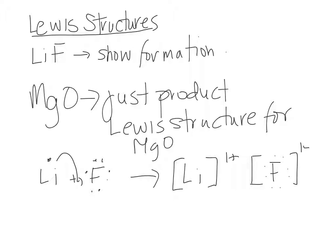For the product, when I say show the Lewis structure for magnesium oxide, I'm just asking for the right-hand side. So what I'm expecting is just Mg 2+, oxygen 2-.